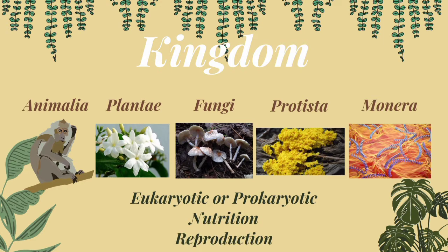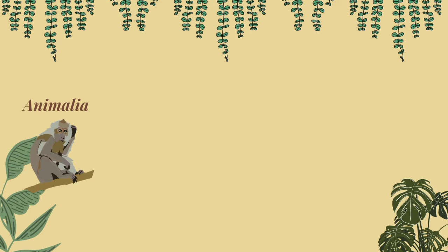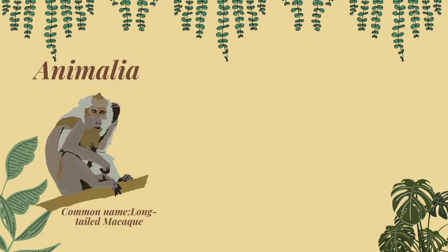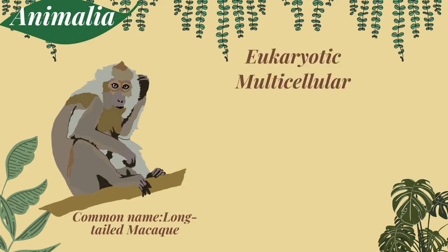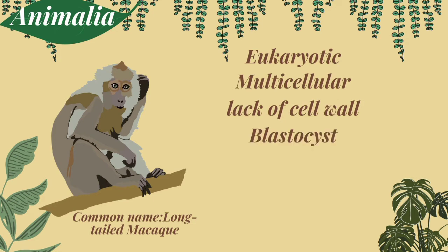First, let me show you what is in the kingdom Animalia. In kingdom Animalia, we will see species like animals — for example, a monkey. They are eukaryotic, multicellular, and have no cell wall. Their reproduction goes through the process of blastocysts, a part of embryo development. In most cases, they get nutrition by being heterotrophic, meaning they eat other organisms such as other animals or plants. And they are also motile, which means they can move.